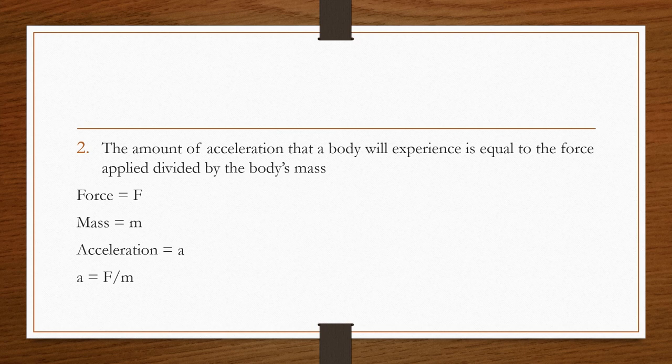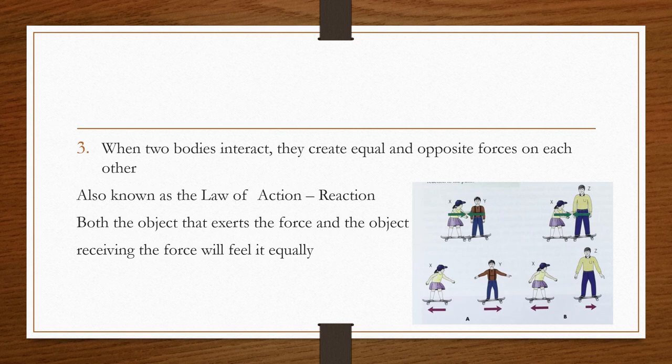The force acting on an object equals the product of its acceleration and its mass. This helps us produce acceleration. The amount of acceleration that a body will experience is equal to the force applied divided by the body's mass. So, force over mass equals acceleration. When two bodies interact, they create equal and opposite forces on each other. This is known as the law of action-reaction. Both the object that exerts the force and the object receiving the force will feel it equally. Very important.